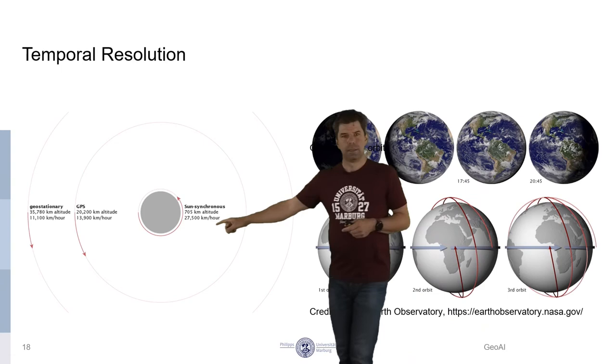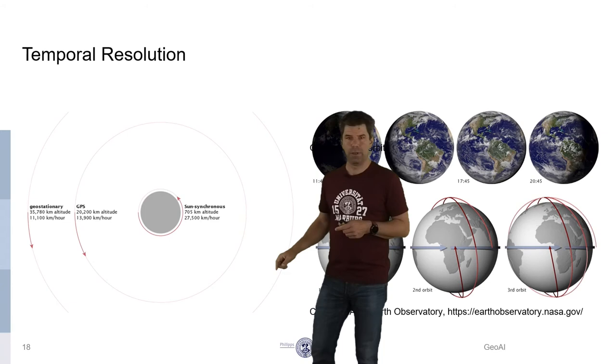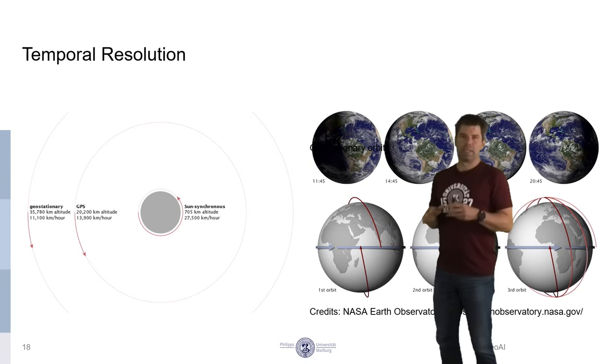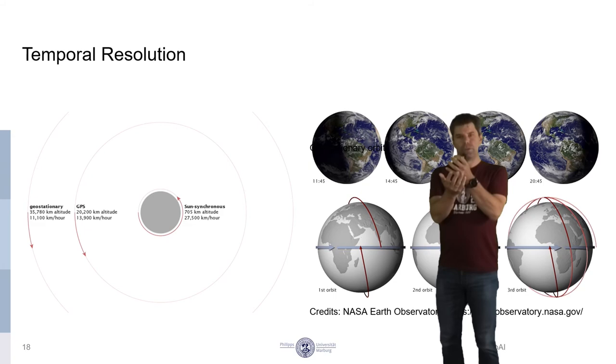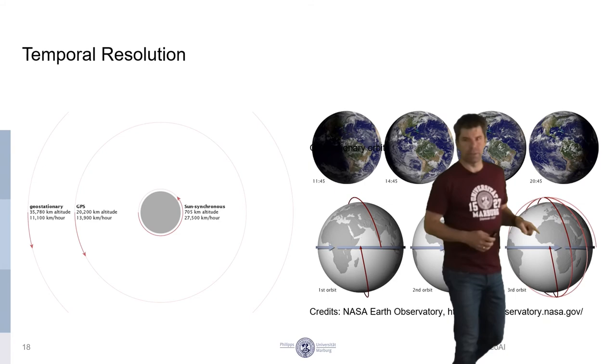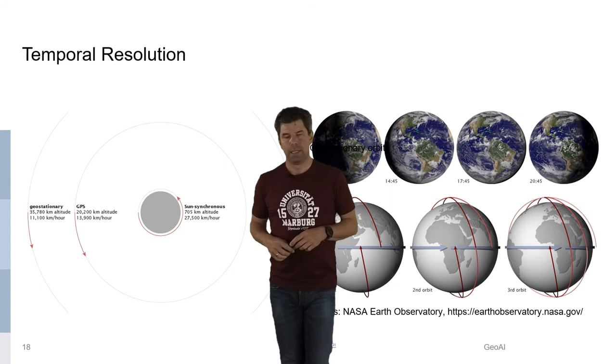When you are on a satellite in that orbit, then you have to circle quite fast around the Earth. And that's illustrated actually here. You go around the Earth in about 100 minutes, 99 minutes, and the Earth is rotating below you. So every time you rotate around that Earth, and also here, you will look at a different stripe of the Earth.